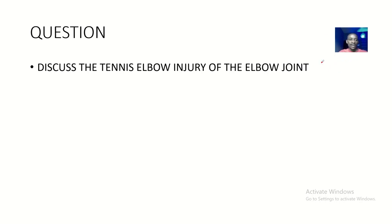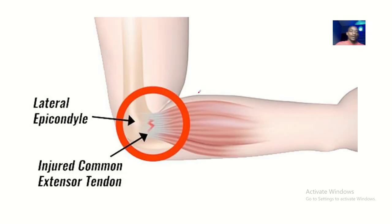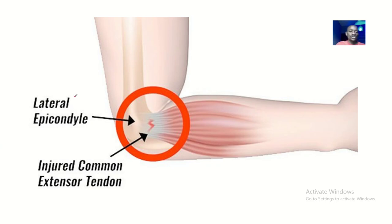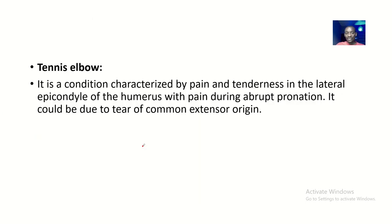Our question today is to discuss a tennis elbow injury of the elbow joint — how it is caused, what are the effects, and what are the presentations. It is first of all named tennis elbow because it occurs more in people that play tennis, because you stress the lateral region of your elbow so much. But it can occur in anybody, even if you are not a tennis player. It is also known as injury to the lateral epicondyle and injury to the common extensor tendon.